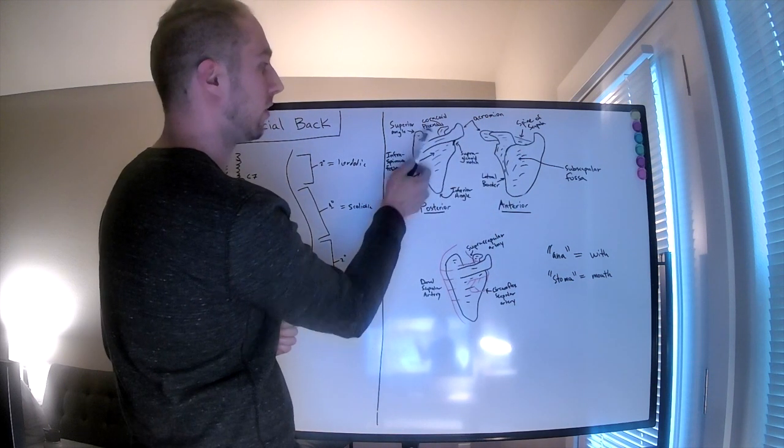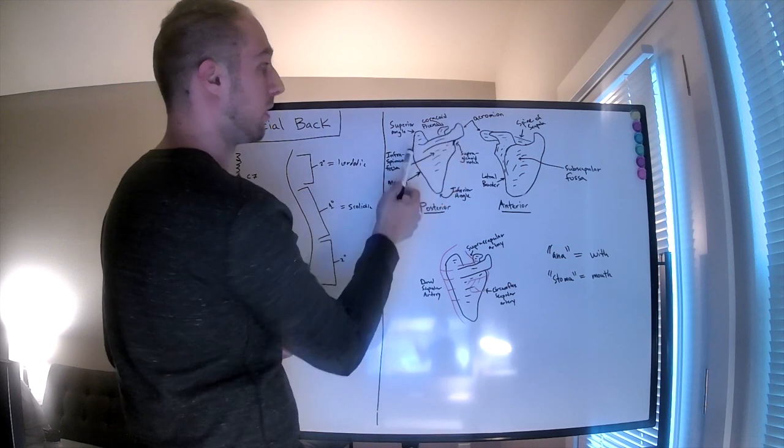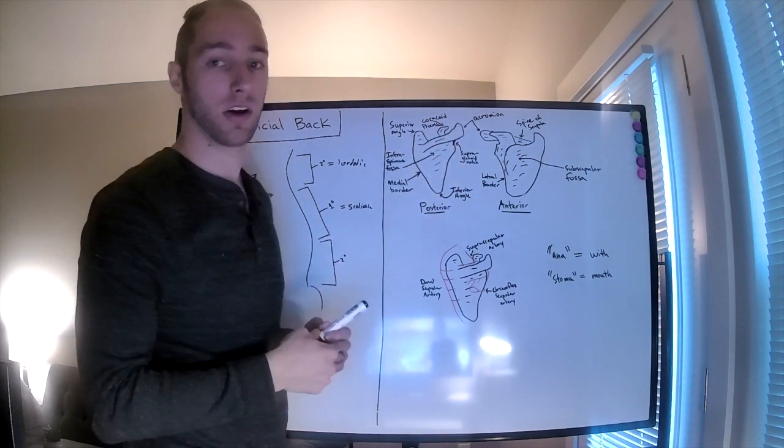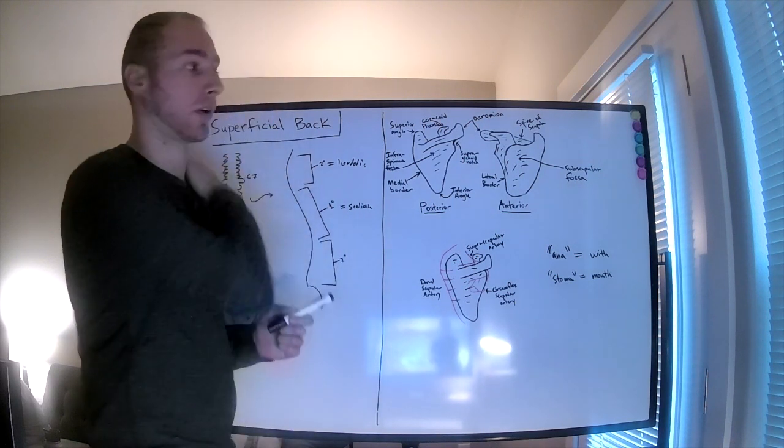You have the superior angle, the coracoid process, and your acromion. Your acromion is an extension of the spine of the scapula, which is one of the very palpable landmarks of the back.